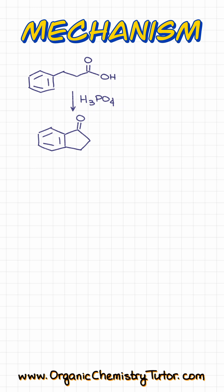Let's try to figure out if we can come up with a reasonable mechanism. Probably the most reasonable first step here is going to be to protonate our carboxylic acid with our mineral acid, giving us the following intermediate. And while the phosphoric acid that we're using here is not the strongest mineral acid, it is still probably one of the most reasonable steps.